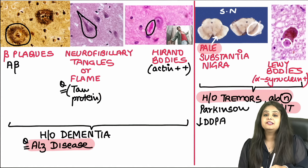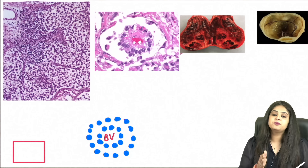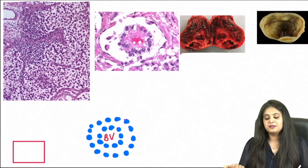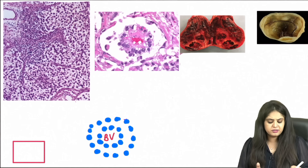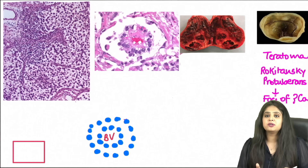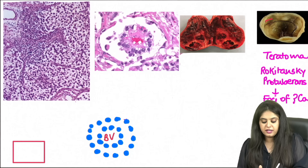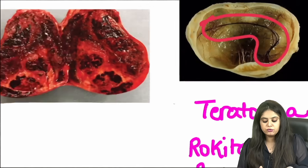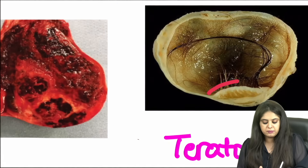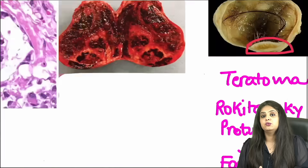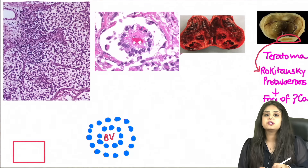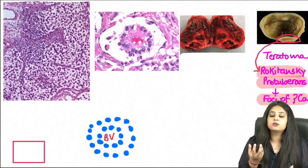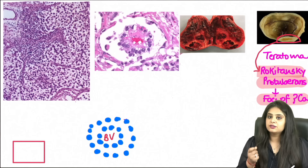Moving on to ovarian tumours, as many of you requested. Starting with the easiest — teratoma — where you see a tuft of hair in the ovary, possibly a tooth or other organ. Important to focus on the narrow nipple-like projection known as the Rokitansky protuberance — this is important because cancer may be hiding in this solid area, requiring a scalpel to examine what is underneath.